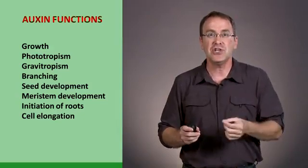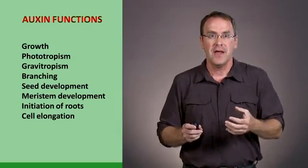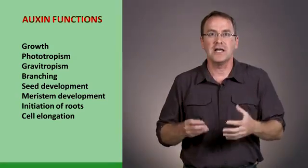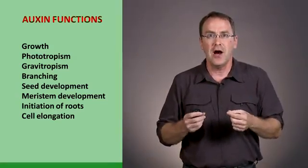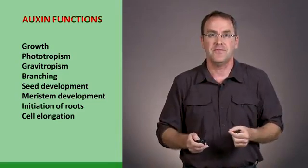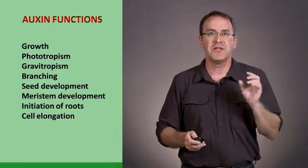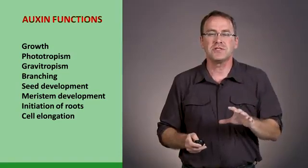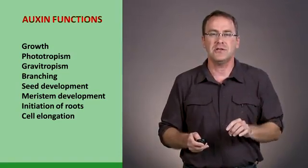One is initiation of roots. Auxin is the hormone which causes roots to form, and auxin is the hormone which stimulates cells to elongate. So let's talk about this role, that one of the major roles of auxin is to stimulate cell elongation.